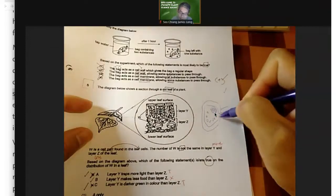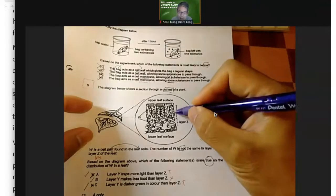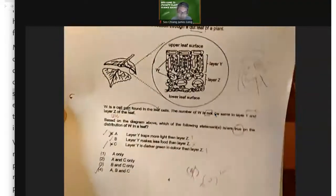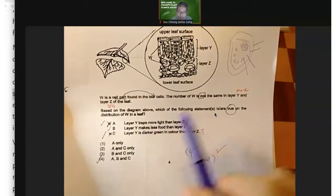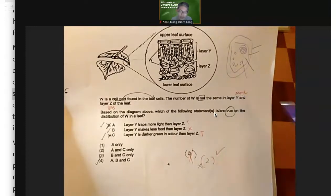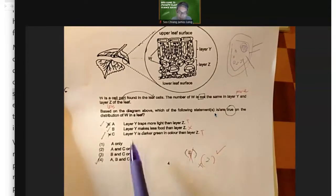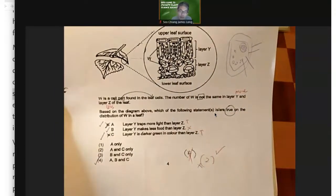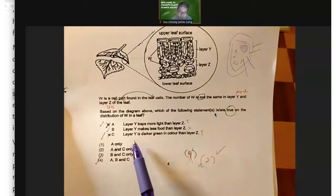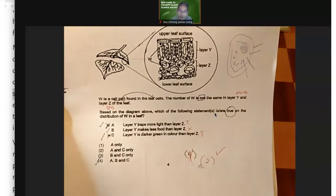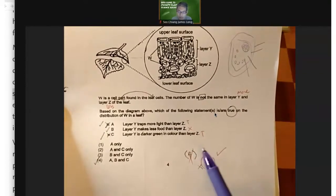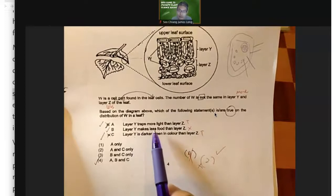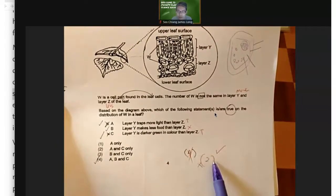Based on the diagram above, which of the statements is or are true? If my guess is correct and W is the chloroplast, because it is a part found in leaf cell and we learned about drawing of leaf cell before. This big one will be the nucleus, this is the cell wall, cell membrane, cytoplasm, and this will be the chloroplast which looks kind of like this. Although it's strange that these cells here do not have cell wall. If these little circles are the chloroplast which contains chlorophyll that traps light, then layer Y traps more light than layer Z is correct. More chloroplast will have more chlorophyll, and that will trap more light. Layer Y is darker green in color because if there's more chloroplast, there's more chlorophyll, and chlorophyll is green. So it will be greener. And if there's more chlorophyll there, it will make more food. Y should be making more food, not less food. So what is true is A and C is true.